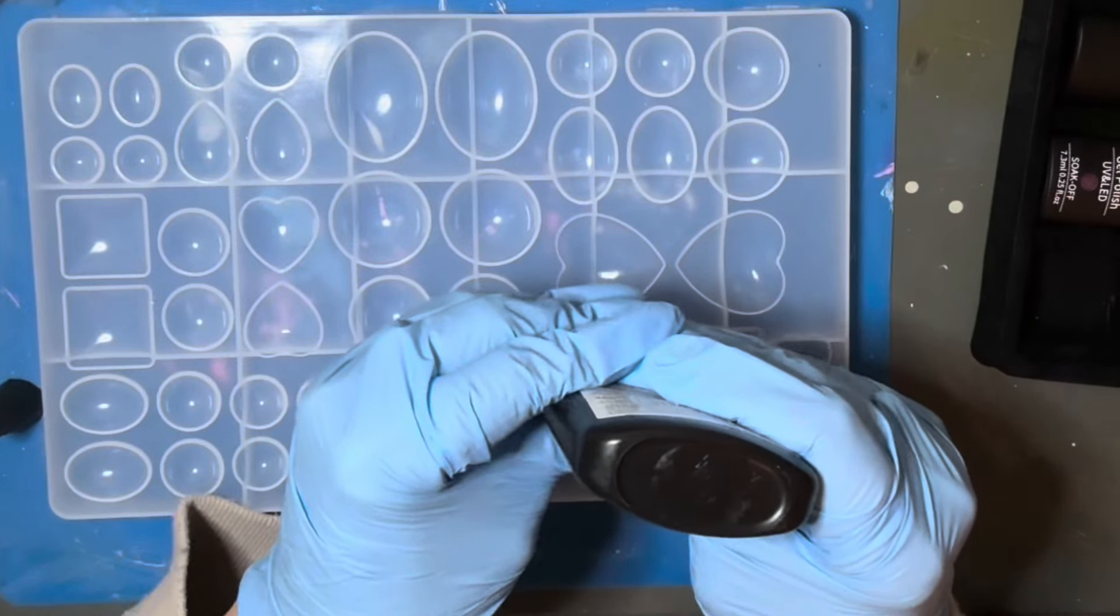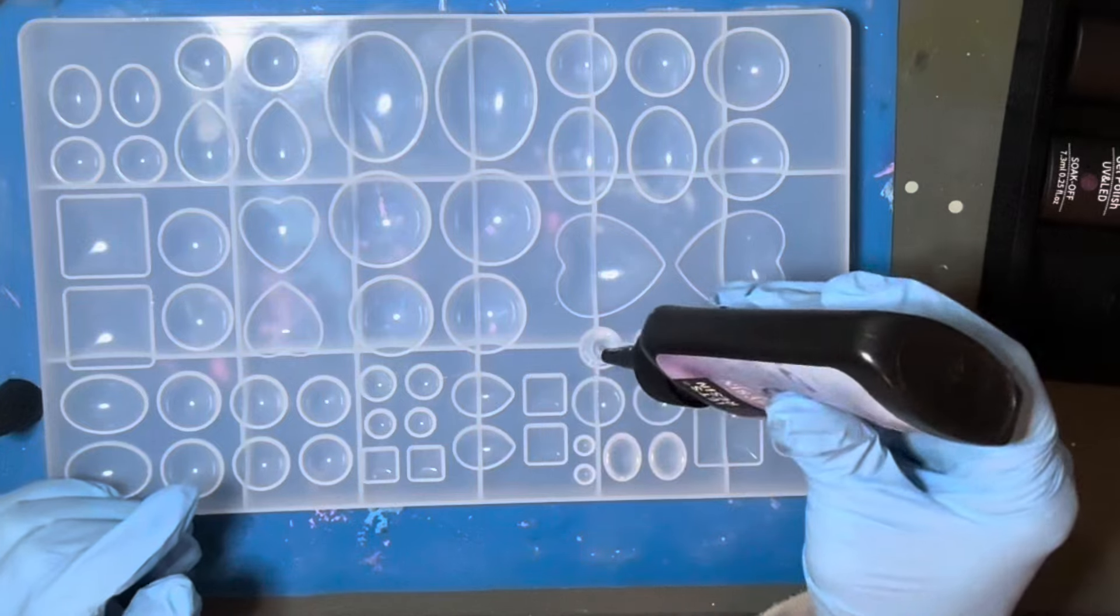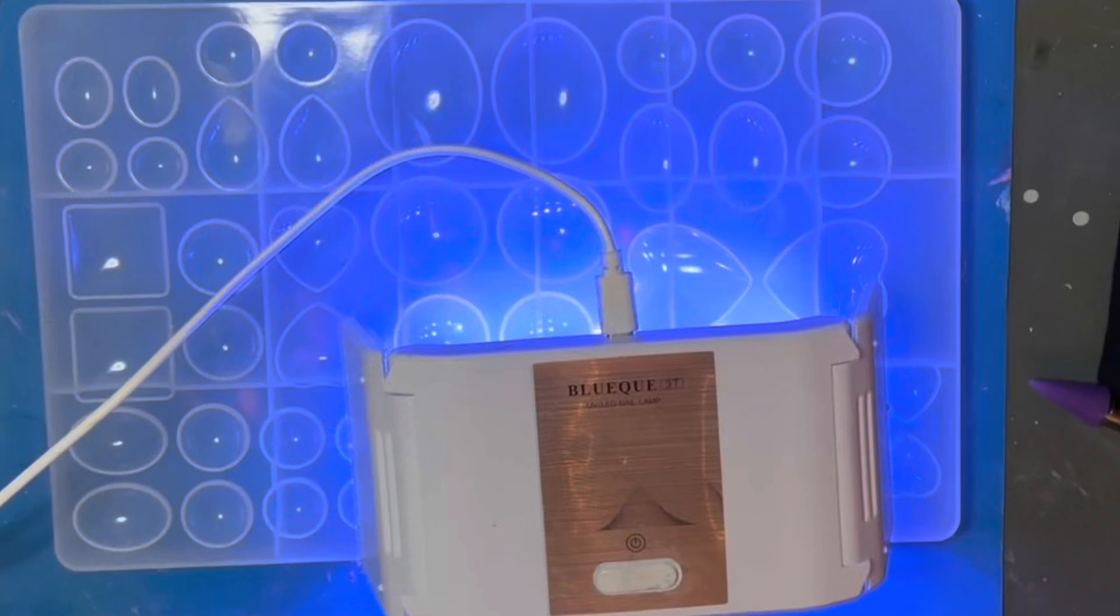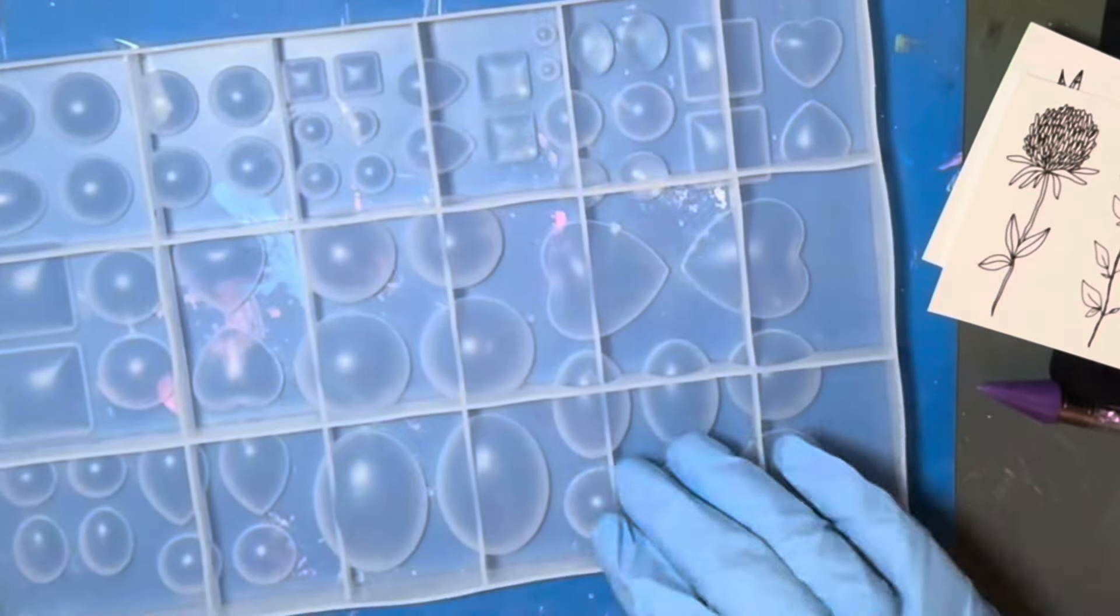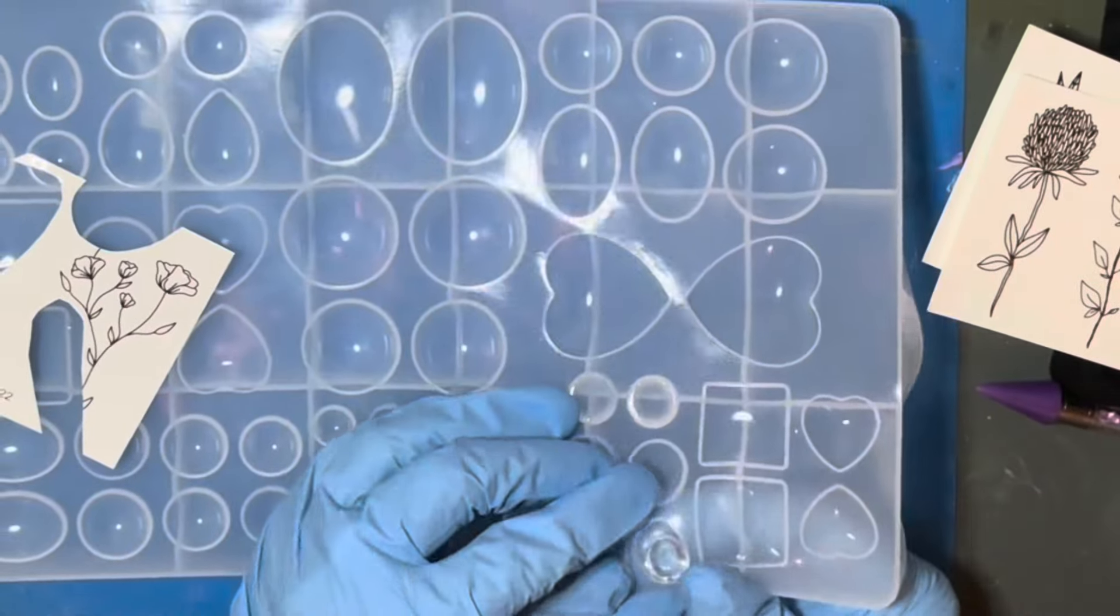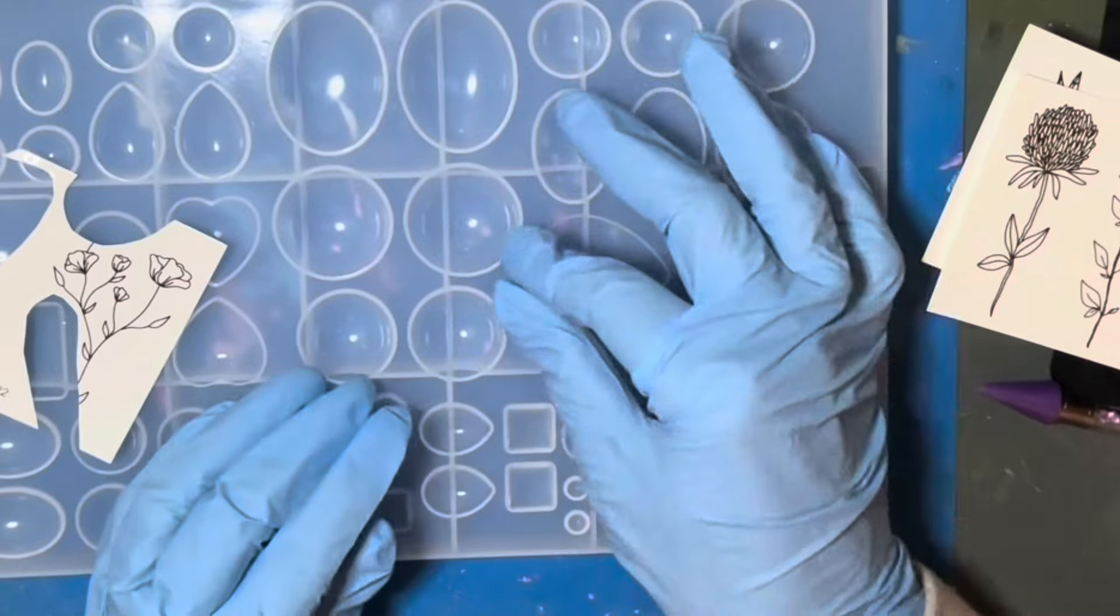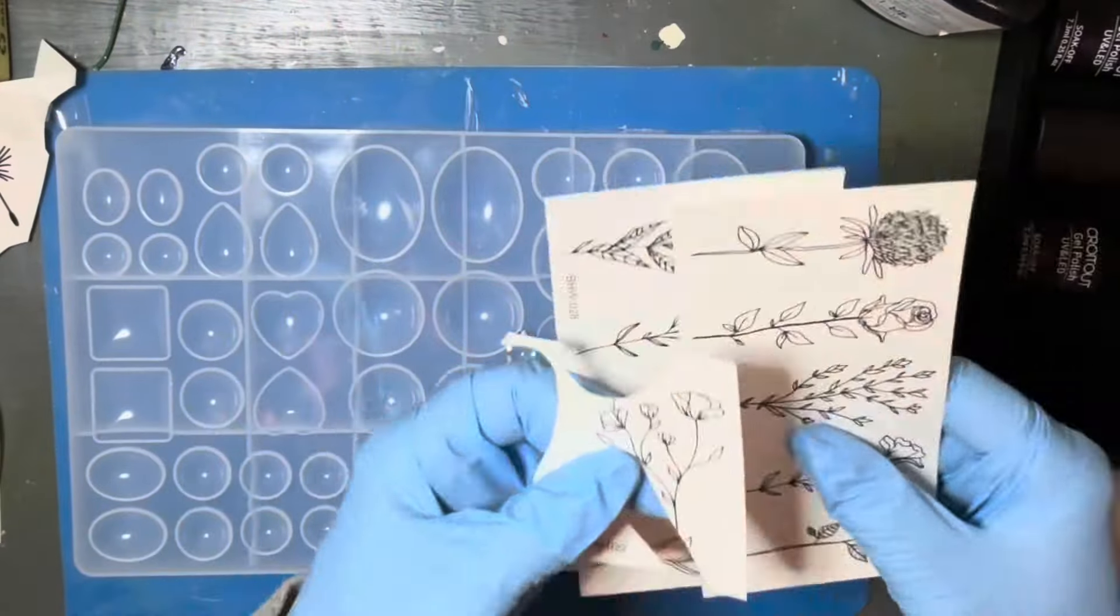So I'm just filling up these molds, these ring molds, earring molds, whatever you want to make out of them with UV resin and then I cure them on both sides for three minutes and then I'm going to take them out.